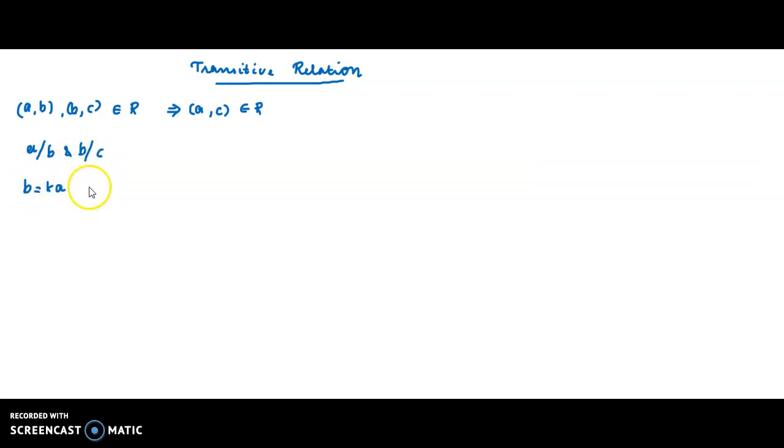So B divides A. Now B divides C. C is C, B is the divisor. So this is the divisor. This is K. 8 is equal to 4 into 2. B is equal to K into A. So if you have a divisor in two factors, you have a divisor in two factors.